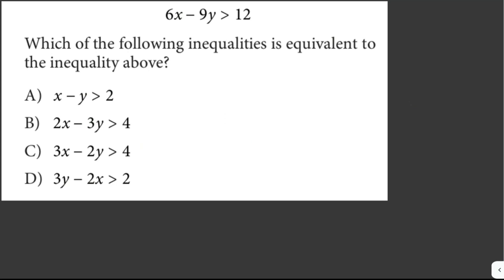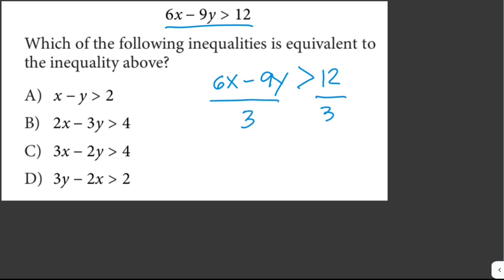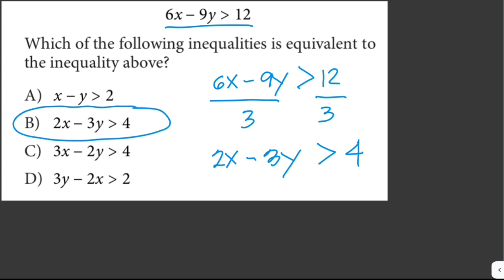Which of the following inequalities is equivalent to the inequality given? All terms are divisible by 3, so we divide both sides by 3: 6x - 9y > 12 becomes 2x - 3y > 4. We have 2x - 3y > 4 in our choices, so the answer is letter B.